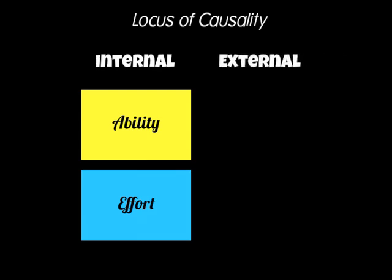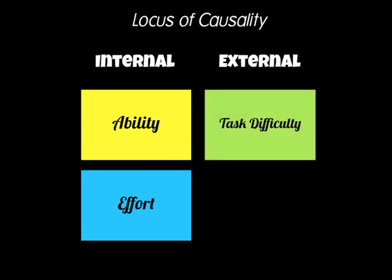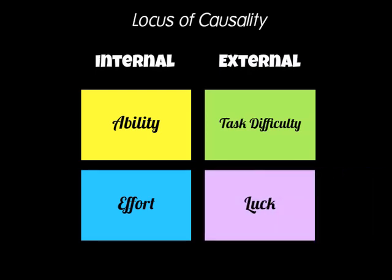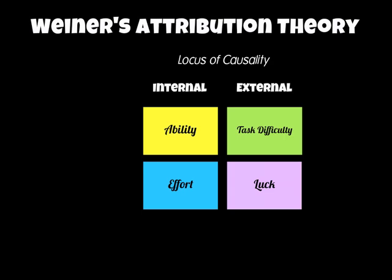There are also external factors on the locus of causality — you could blame something outside of yourself. You could blame the task itself being too hard: 'That team were better than us, it was never going to succeed.' Or another external factor you could use is luck — 'We were just unlucky, we hit the bar three times, hit the post twice, the ball bobbled from a penalty.' So you're blaming external factors for your success or failure. Internal and external factors are to do with the locus of causality — was the reason inside of you or outside of you?